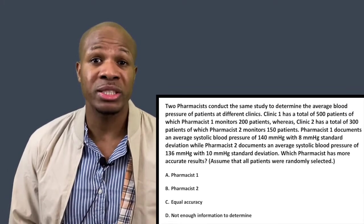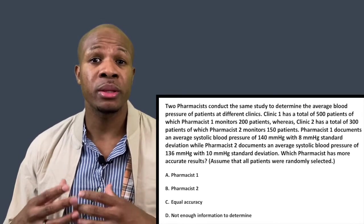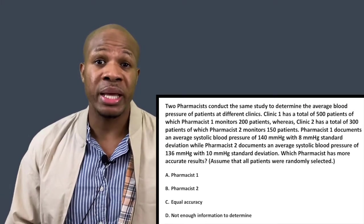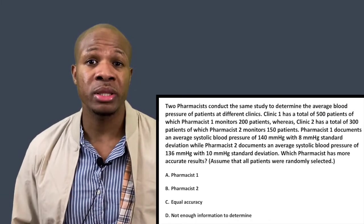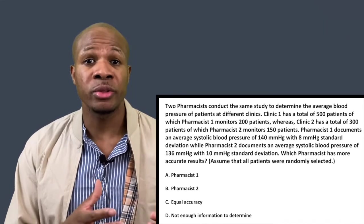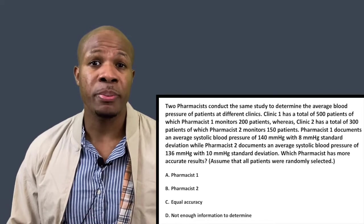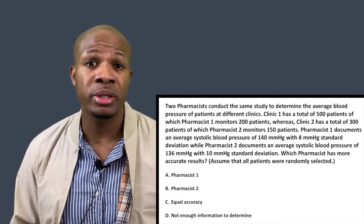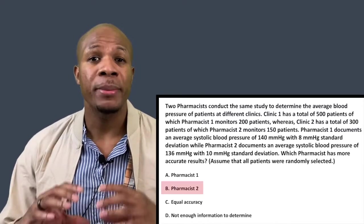However, the pharmacists are not measuring every patient. Pharmacist one documents only 200 out of 500 patients, and pharmacist two documents only 150 out of 300 patients. If accuracy is determined by the percentage of the population sampled, then pharmacist two is going to have the more accurate result.